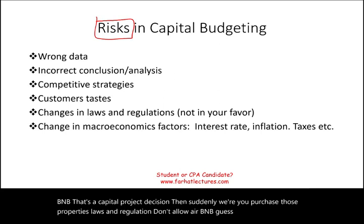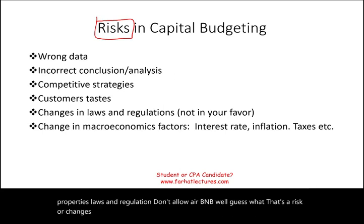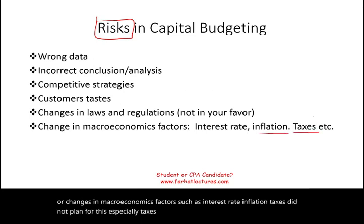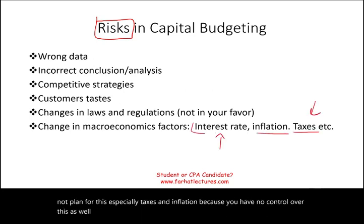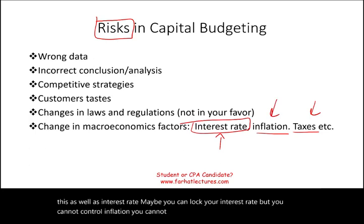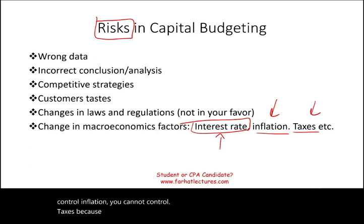That's a risk. Or changes in macroeconomic factors such as interest rate, inflation, and taxes. You did not plan for this — especially taxes and inflation — because you have no control over them, as well as interest rate. Maybe you can lock your interest rate, but you cannot control inflation. You cannot control taxes because inflation is based on macroeconomic factors and taxes are set by the government. You're always taking a risk.